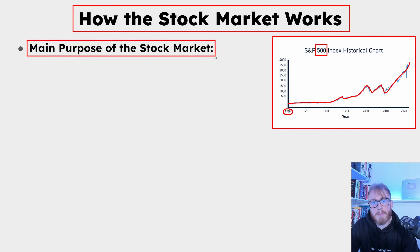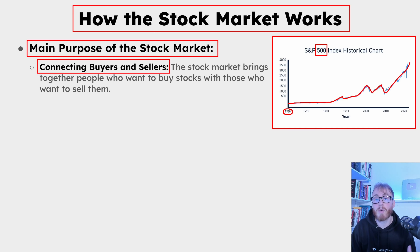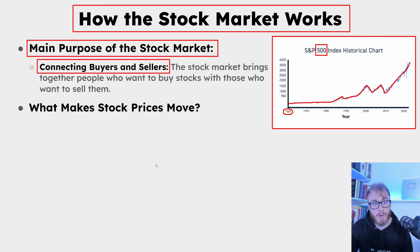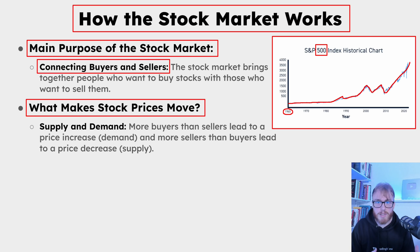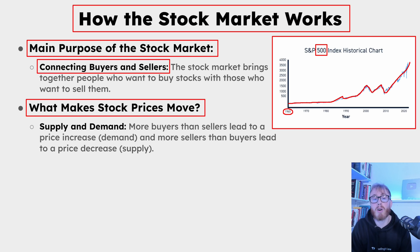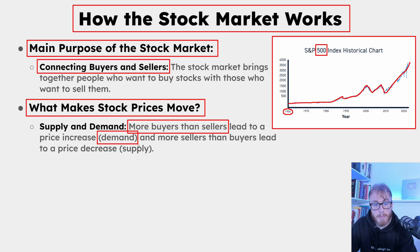What is the main purpose of the stock market? The main purpose is basically to connect buyers and sellers — bringing together people who want to buy stocks with people who want to sell them. What makes stock prices move? The force behind all stock market movements is supply and demand. In simple terms, more buyers than sellers leads to a price increase (demand), and more sellers than buyers leads to a price decrease (supply).